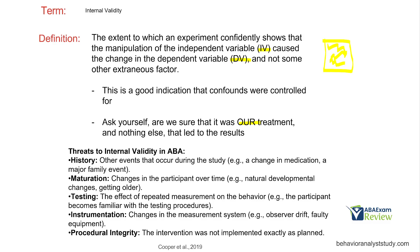What are some common threats to internal validity in ABA? These are all research terms, but they also apply to your individual clients. Think about history — other events that occur during the study, like a medication change, changed schools, a breakup, a major family event, their dog died, they lost their favorite toy. All these things happen day to day in our client's life and can affect how they respond to the environment.